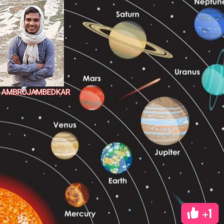Pluto is a dwarf planet. Mercury, Venus, Earth, and Mars are called terrestrial planets, and Jupiter, Saturn, Uranus, and Neptune are called gaseous planets.